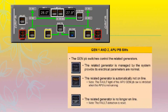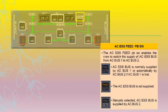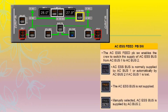When there are no lights on GEN 1, GEN 2, or APU GEN pushbuttons, the related generator is managed by the system provided its electrical parameters are normal. When the fault light appears, the related generator is automatically taken offline. The fault light of the APU GEN pushbutton switch is inhibited when the APU is not running, whereas the off light comes on when the related generator is no longer online.